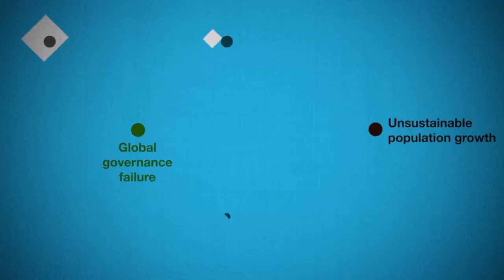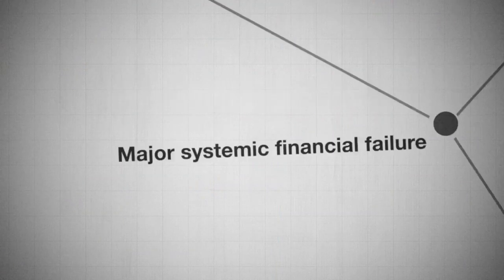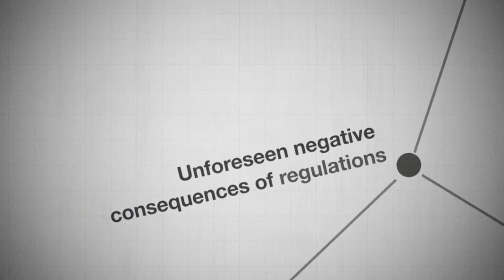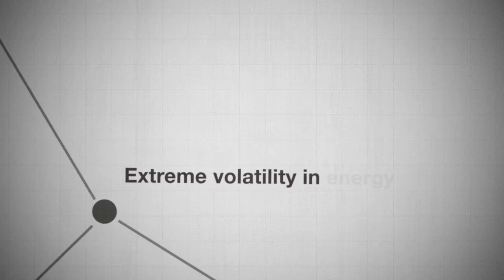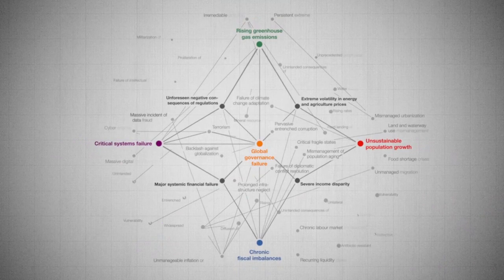Each of these are linked by four critical connectors: severe income disparity, major systemic financial failure, unforeseen negative consequences of regulation, and extreme volatility in energy and agricultural prices. There are 449 interconnections.